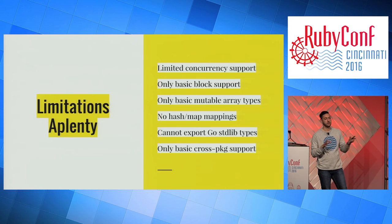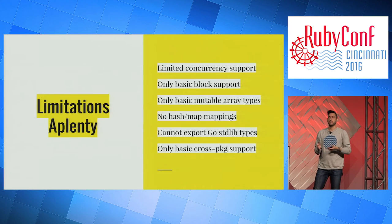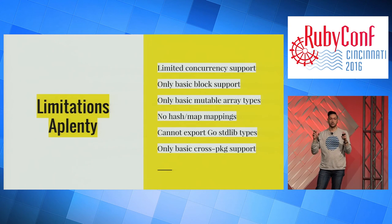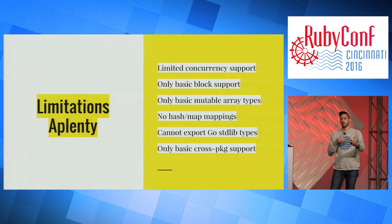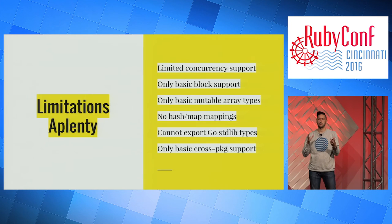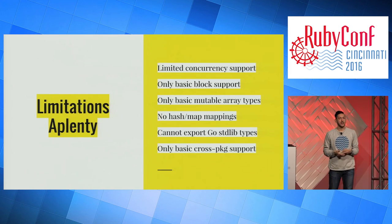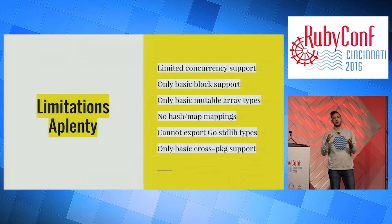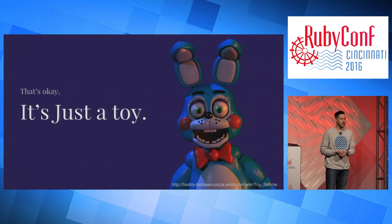It doesn't have mapping from hashes in Ruby to maps in Go or vice versa. It can't really export standard library types — so if you had an HTTP server and wanted to return an HTTP response struct from Go into Ruby, Gorb can't do that automatically. You could wrap it inside your own struct that returns bits and pieces to Ruby separately. There's also no great cross-package support story — you can use stuff across packages but it's hard to export them to Ruby.